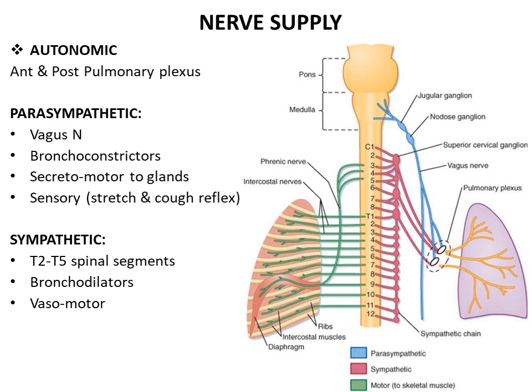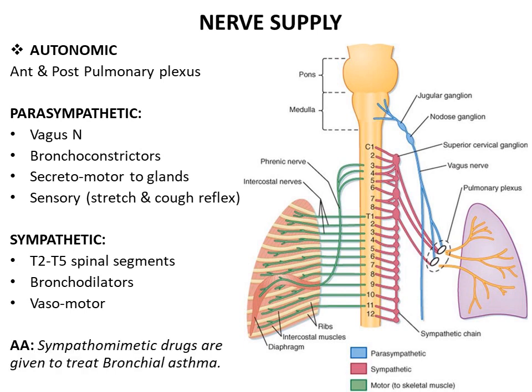In bronchial asthma, characterized by spasm of the bronchial muscles leading to difficulty in breathing (dyspnea) and wheezing, it is mostly treated by giving sympathomimetic drugs. These drugs are inhibitory to the bronchial muscle, causing bronchodilatation and relieving the bronchospasm of asthma.